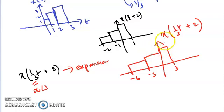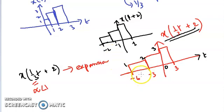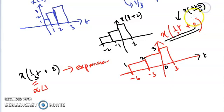So X(1/3 · T + 2) runs from −6 to 3, with values 1, 2, 3 along that expanded time axis. The point T = 0 remains at 0. The expansion caused: 1 to become 3, −1 to become −3, and −2 to become −6. This is the signal corresponding to X(T+6/3).